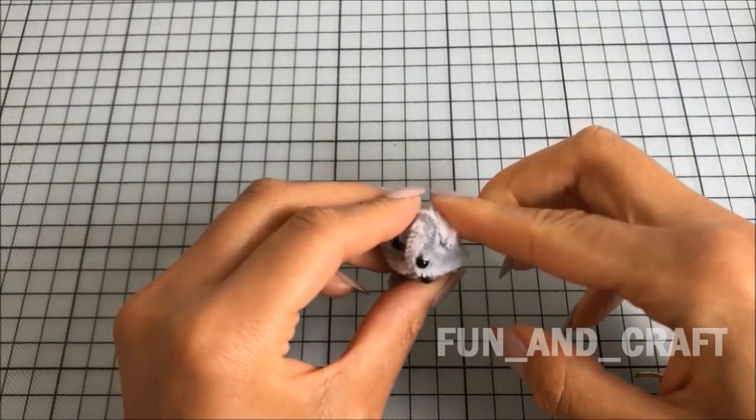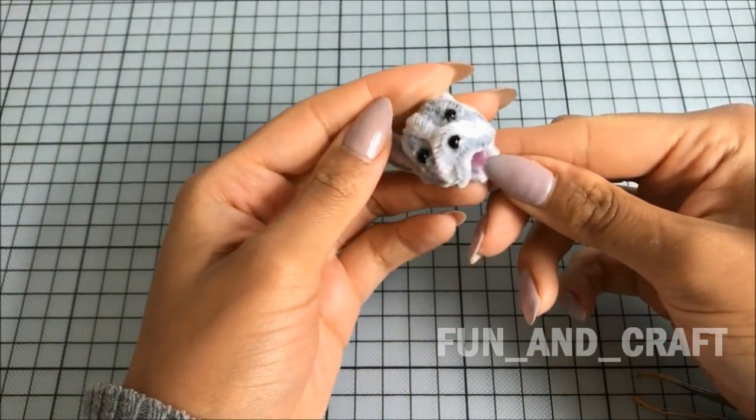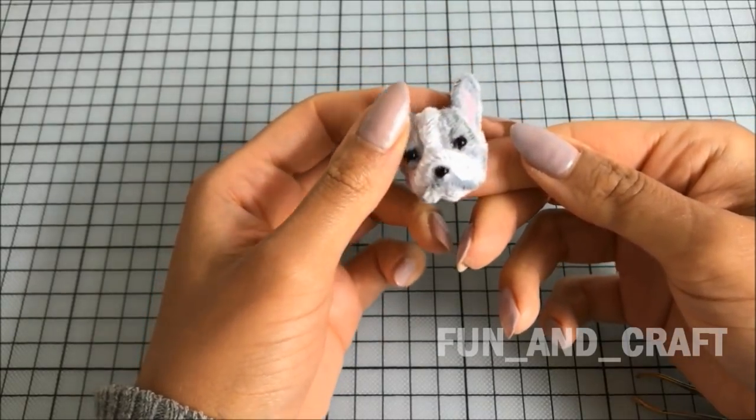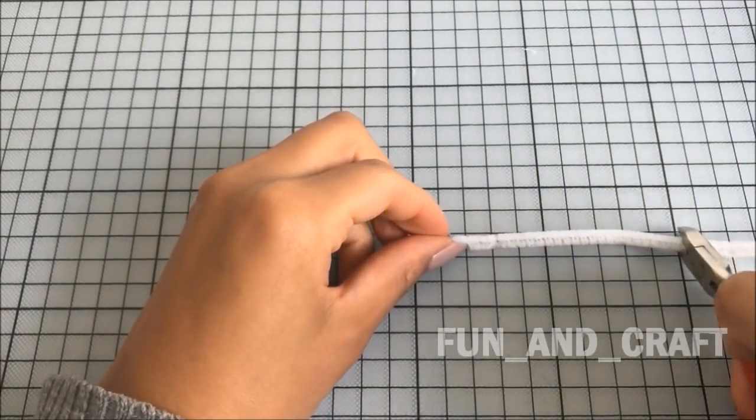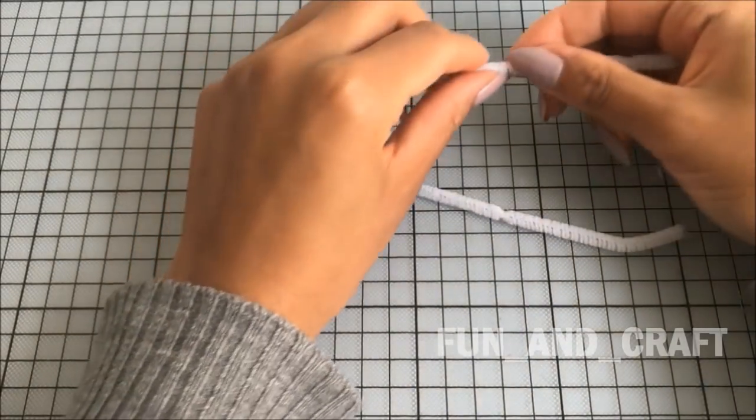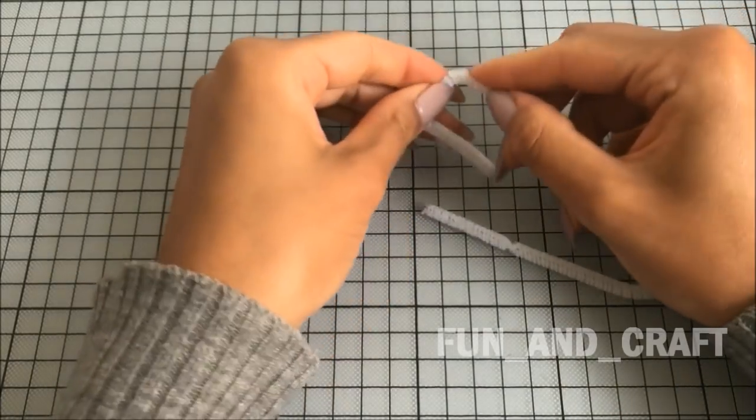Now I'm going to show you how to make the rest of the body. You will need one white pipe cleaner and about four to five gray ones. Start by cutting two pieces of the white pipe cleaner to a size of ten centimeters for the legs. Bend them like you see me doing in the video.